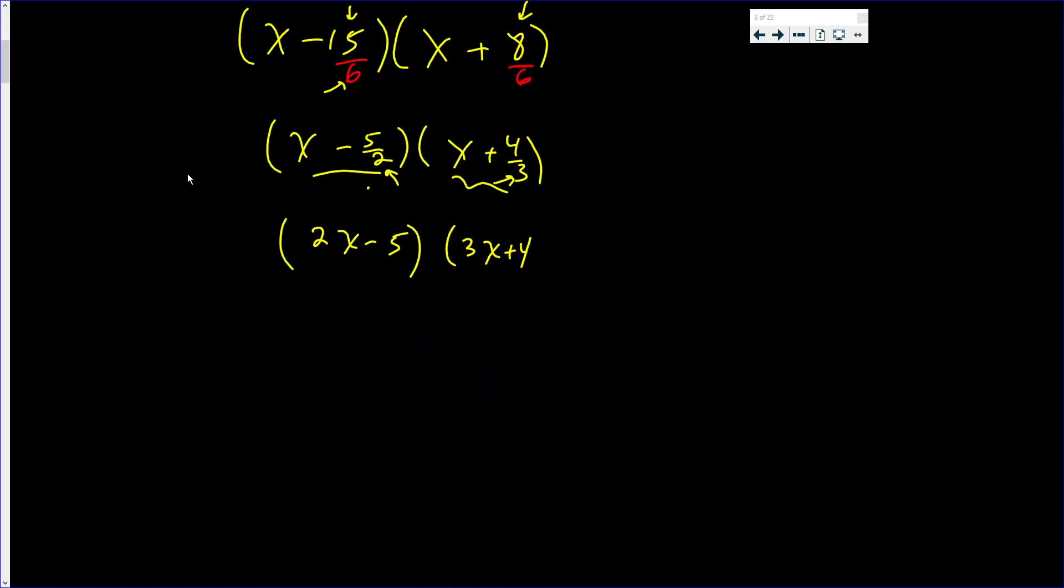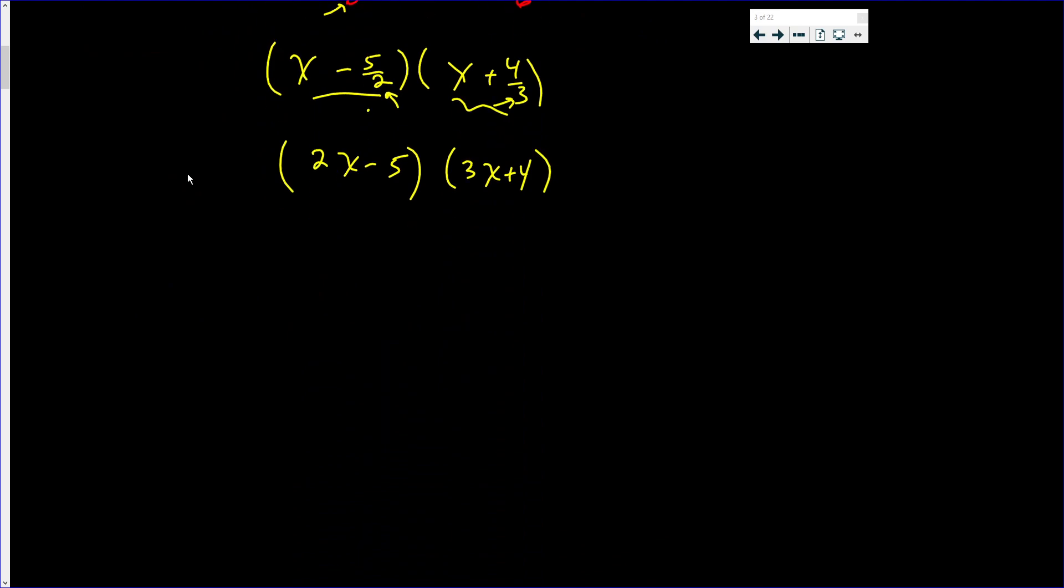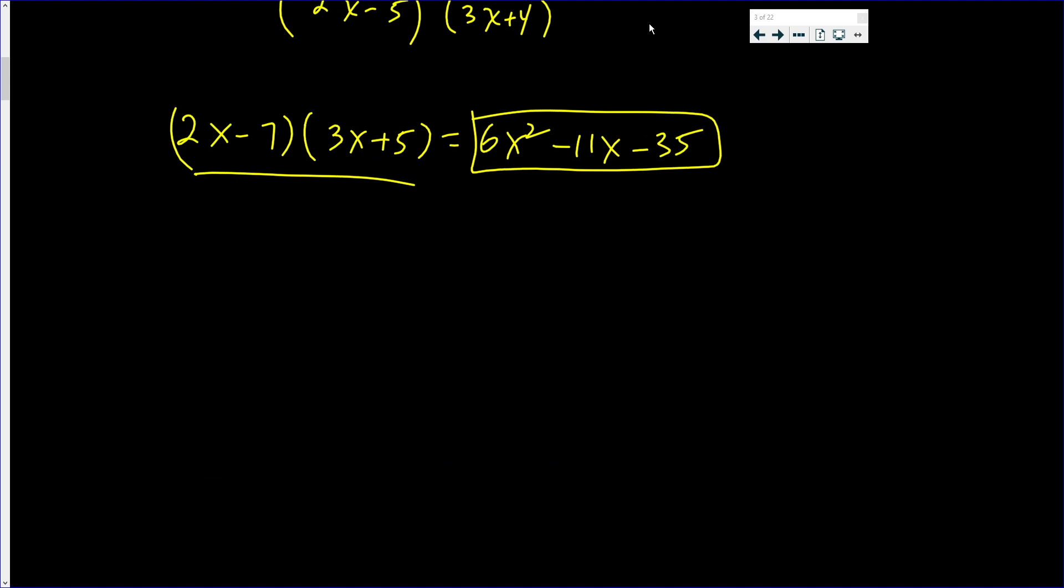Let's try one more, then we'll go on to the proof. If you have 2x - 7, you multiply this by 3x + 5. You'll get 6x² - 11x - 35. So we're going to try to factor this. And we actually have the answer, but let's make believe we don't.